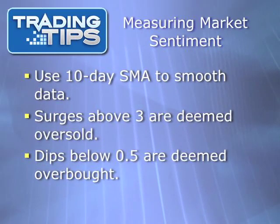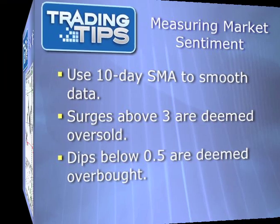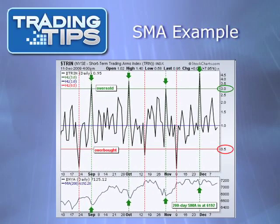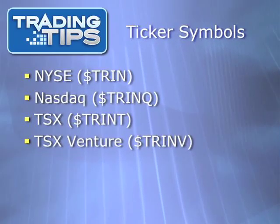On its own, the Arms Index is extremely volatile and may not be all that helpful except in ultra short-term scenarios. To give TRIN more utility, a 10-day simple moving average can be applied to smooth the data. This allows for further interpretations: surges above 3.0 are deemed oversold and thus bullish, while dips below 0.5 are deemed overbought and thus bearish. On this chart, we see the NYSE TRIN with a 10-day SMA applied, along with the blue line at 1.0 and key levels at 3.0 and 0.5 highlighted.